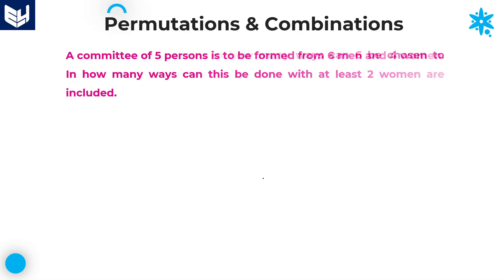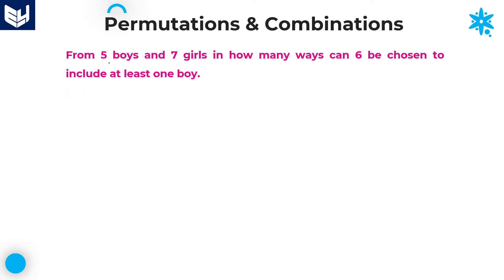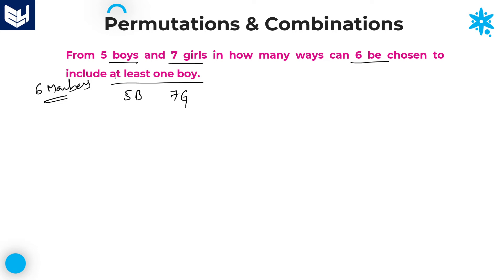Let's move on to the next question. From five boys and seven girls, in how many ways can six be chosen to include at least one boy? We need to select six members, with the condition of at least one boy — meaning minimum one boy. Possible selections range from one boy up to five boys, since there are only five boys total.